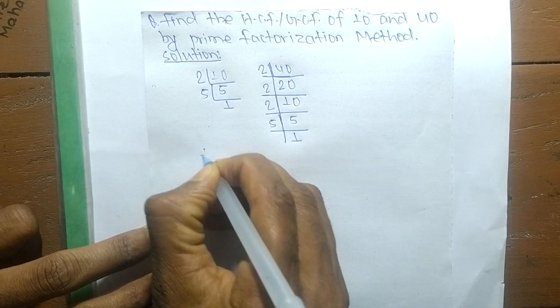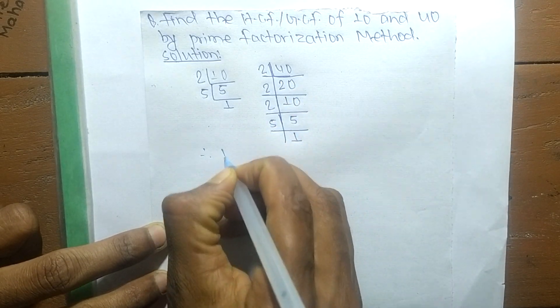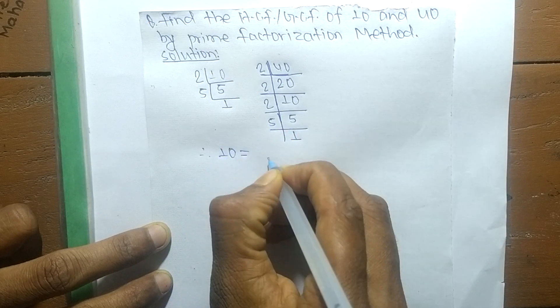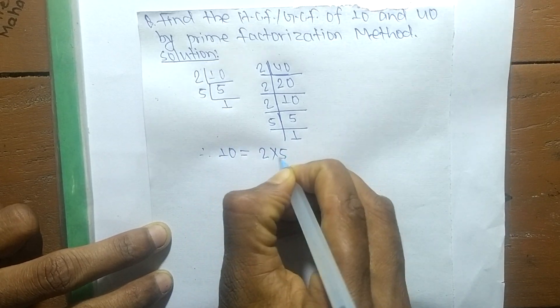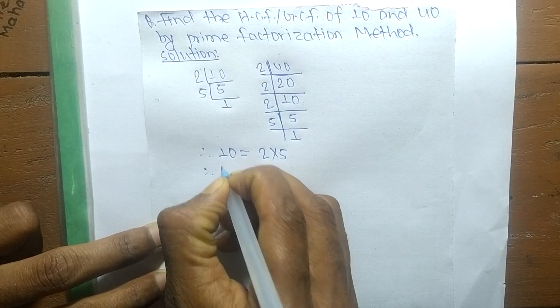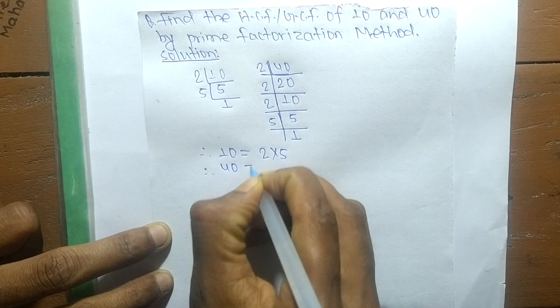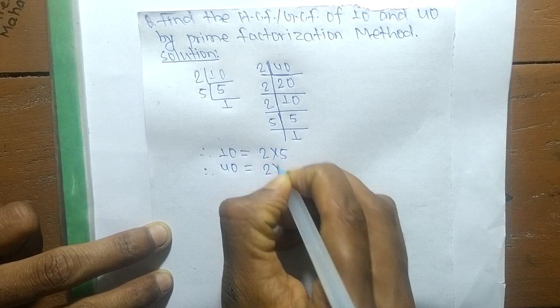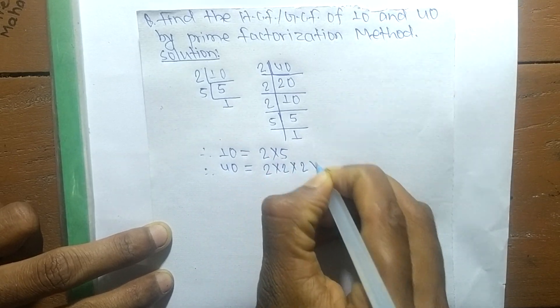...now we write the prime factors. We can write 10 = 2 × 5, and we neglect 1 here. The prime factors of 40 = 2 × 2 × 2 × 5.